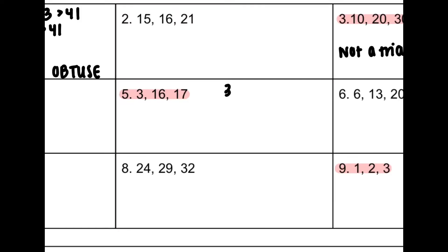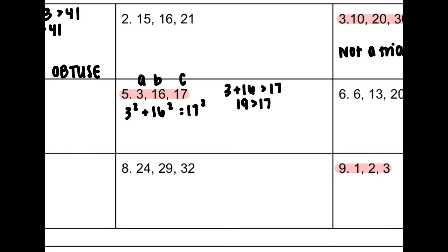Number five: my two smallest are 3 and 16. I add those together and see if they're bigger than my third. 3 plus 16 is 19, and 19 is greater than 17, so I can continue. I label my A, B, and C — C is my largest side, so 17 will be C. So 3 squared plus 16 squared equals 17 squared: that's 9 plus 256, which is 265, compared to 289. Since 265 is less than 289, I have an obtuse triangle.